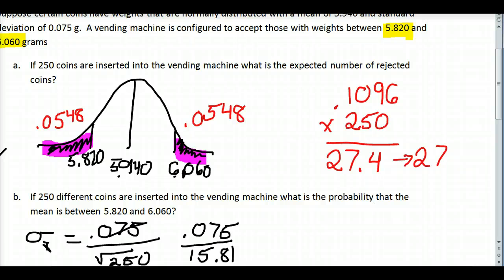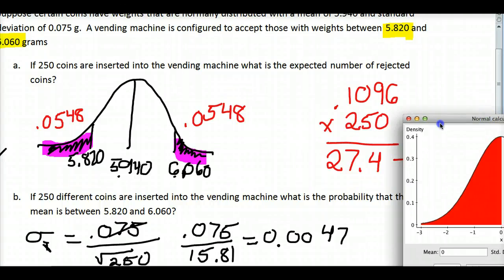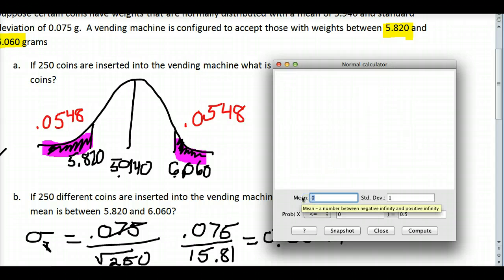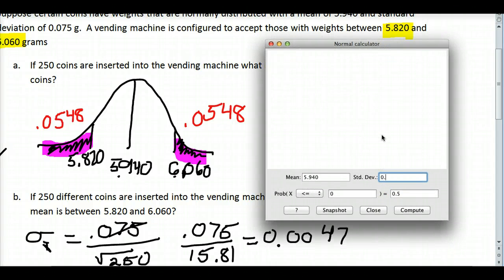So I'm going to go ahead and divide and get a new standard deviation of 0.0047. All right, now I'm going to go back to my StatCrunch and get that calculator back up again. I'm going to use the same mean, 5.940. But now, for my standard deviation, I have 0.0047.